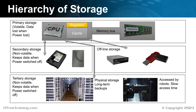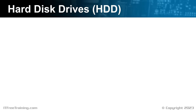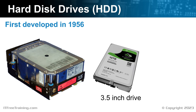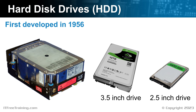I will next have a look at the different types of storage devices that are available. To start with, I will look at hard disk drives, or HDD. Hard disks were developed in 1956 and started to be used more in the 60s, becoming very commonly used in computers. The first hard disks were very large. As time went on, they got smaller. A typical hard disk nowadays is 3.5 inches in size. For laptops or small devices, there is also a 2.5-inch hard disk, which is generally slower and has less storage capacity. Solid-state drives have replaced these smaller hard disks in a lot of cases.